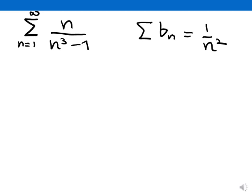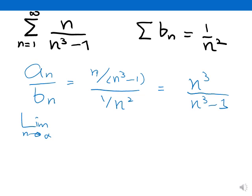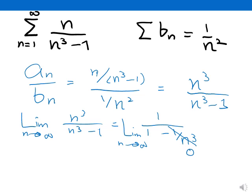Now let's find the ratio an over bn. Here an is n over n cubed minus 1, and bn is 1 over n squared. Simplifying, I take n squared up to the numerator, giving n cubed over n cubed minus 1. Now taking the limit as n tends to infinity, dividing by the highest power n cubed, I get 1 over 1 minus 1/n cubed. As n tends to infinity, 1/n cubed goes to 0, so I end up with 1.